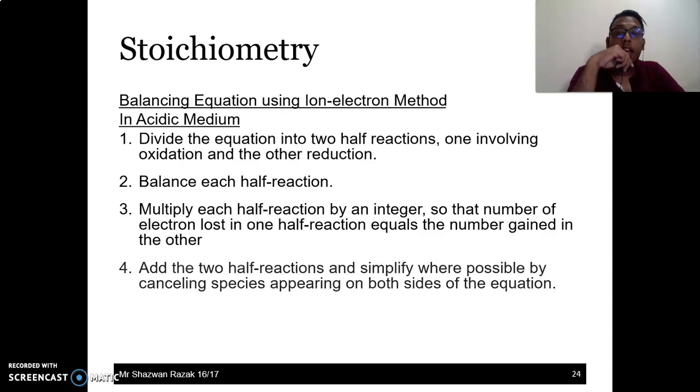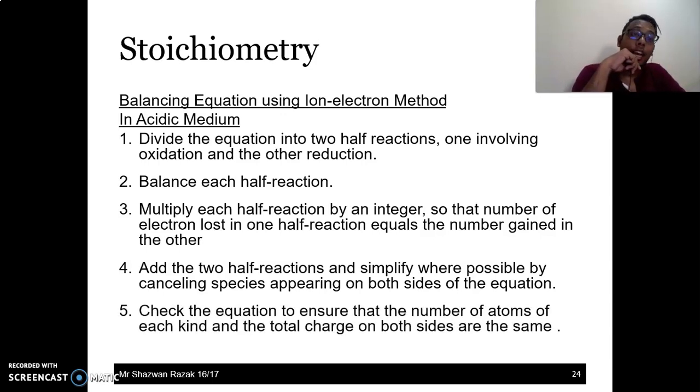And then we will multiply it with an integer to equalize the number of electrons for both half equations. And then we will combine by cancelling the species at the opposite side of the equation. And then we check that the number of atoms and charges for both sides are balanced.